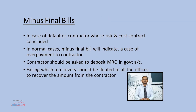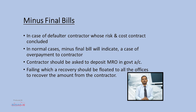The final bill may become minus in case of a defaulter contractor whose risk and cost contract has been concluded, or in normal cases when overpayment has been given to the contractor without keeping in mind the minimum retention at final bill stage. In both cases, the contractor will be asked to deposit an MRO in the government treasury account as recovery to compensate the minus figure. Failing which, a recovery should be floated to all offices to recover the amount from the contractor.